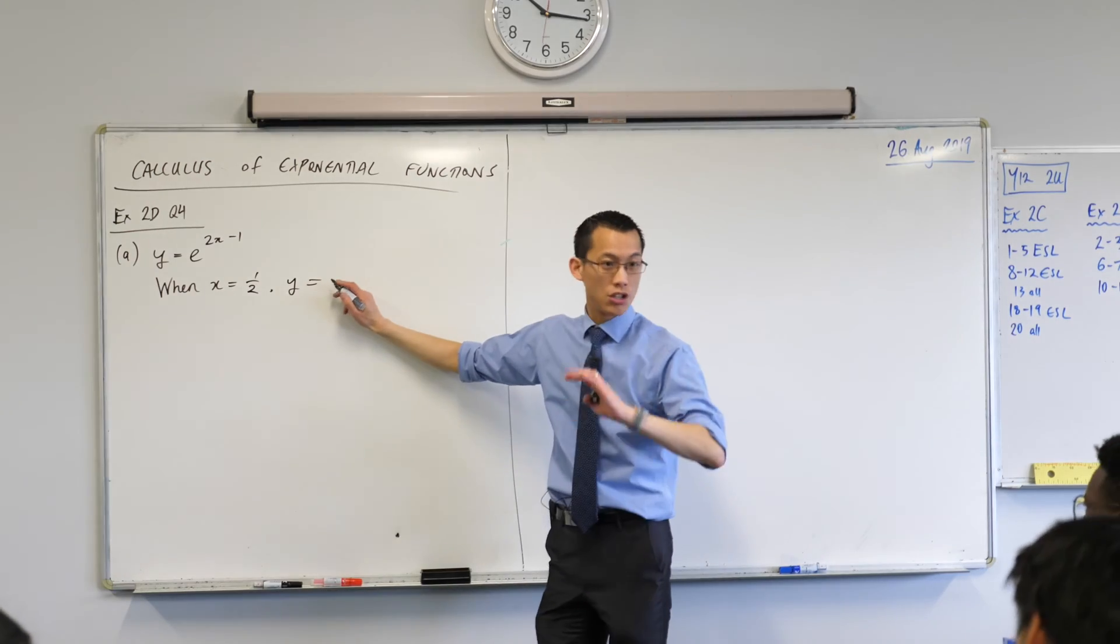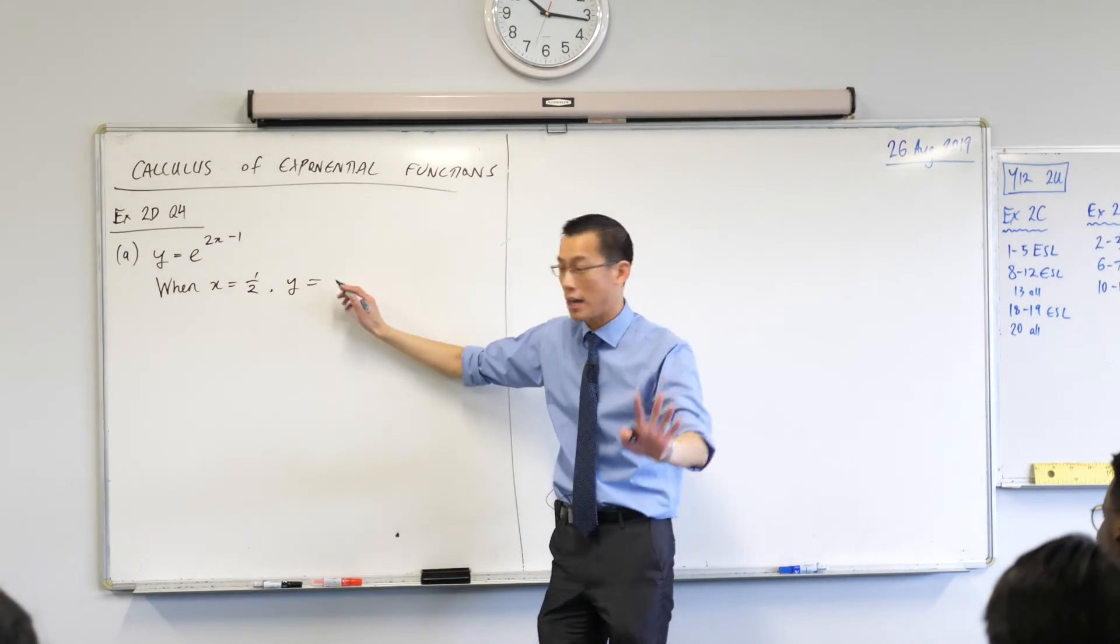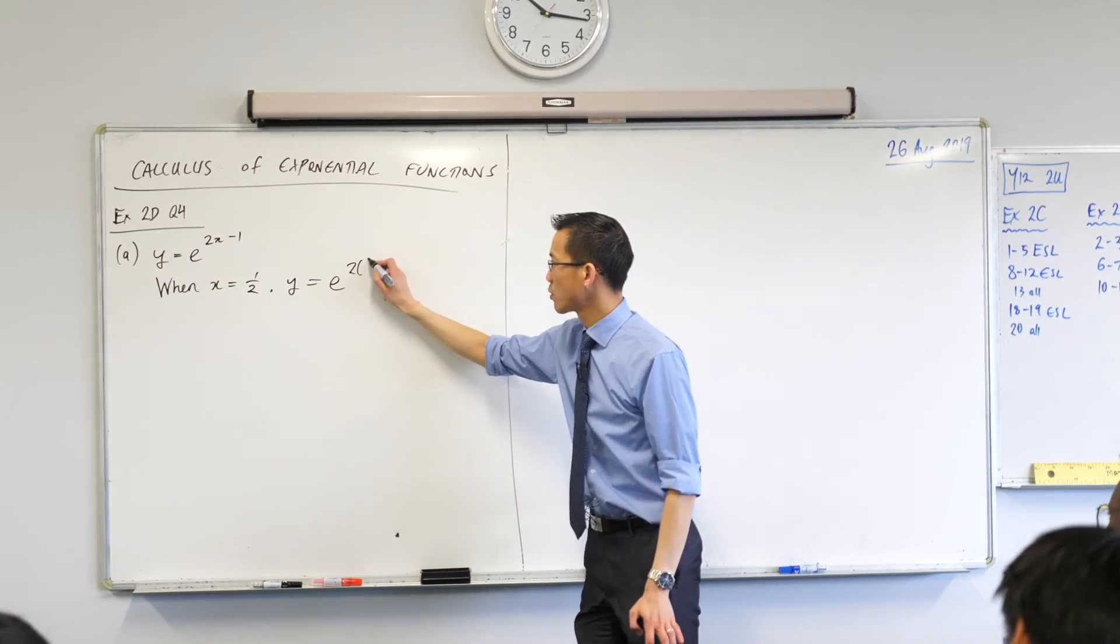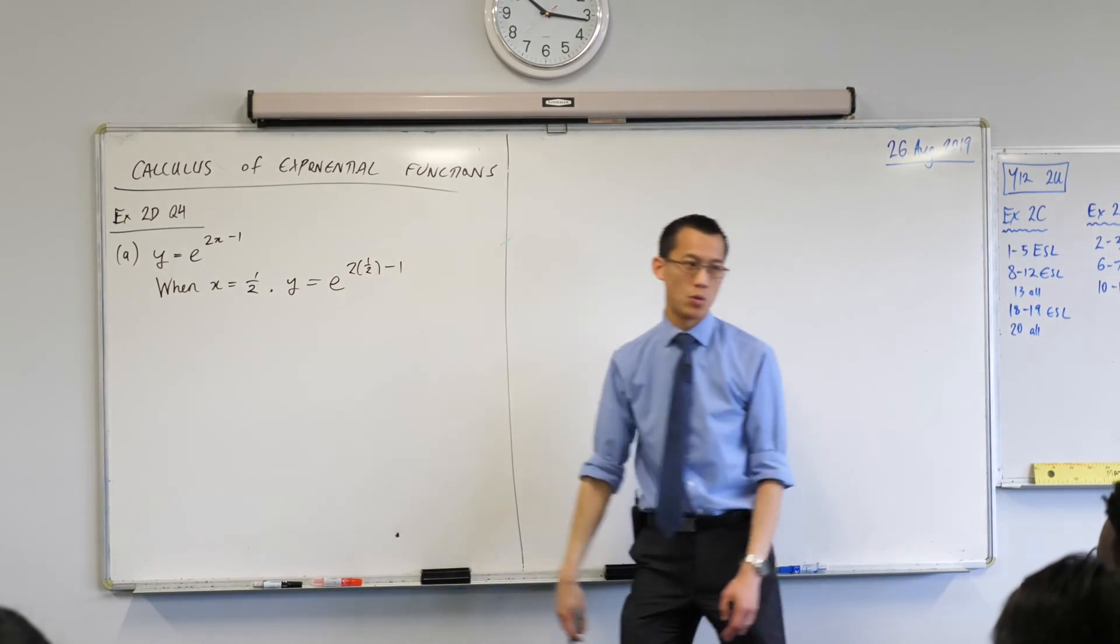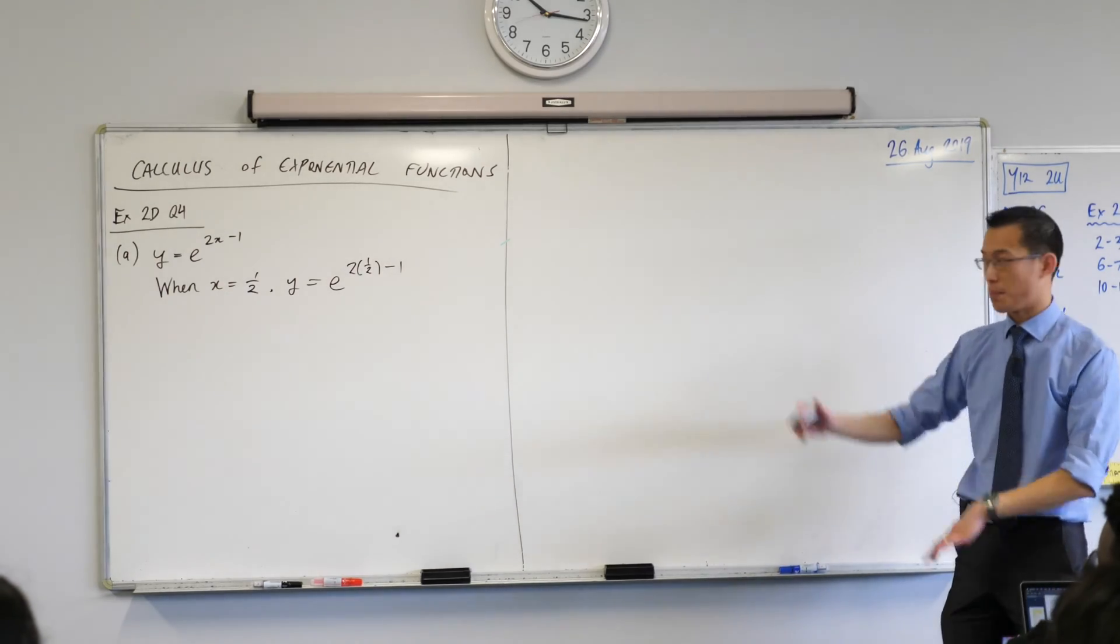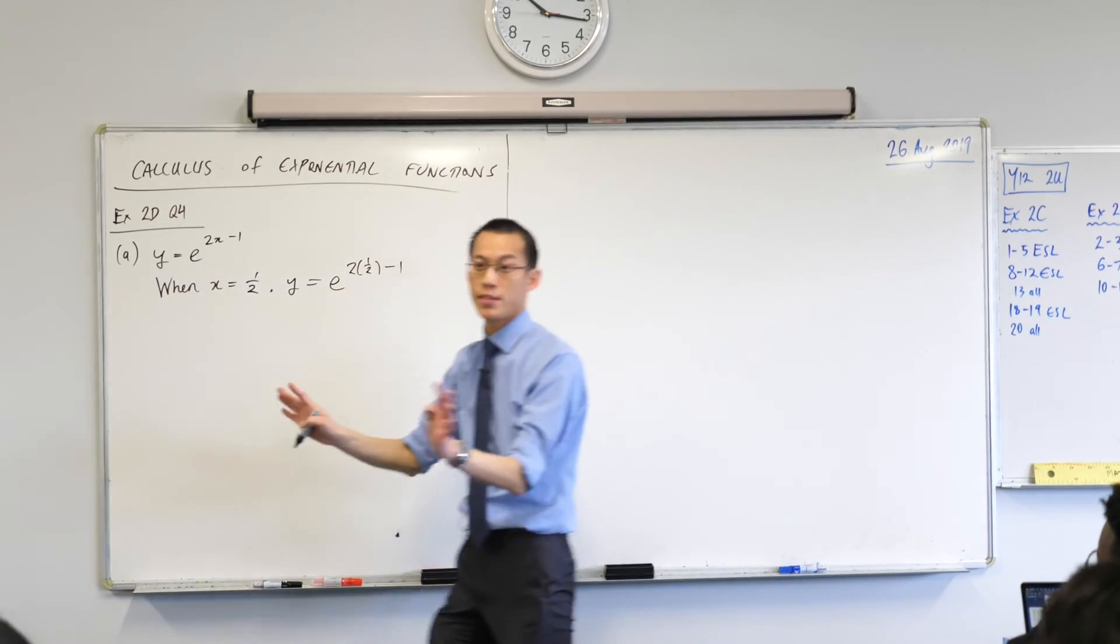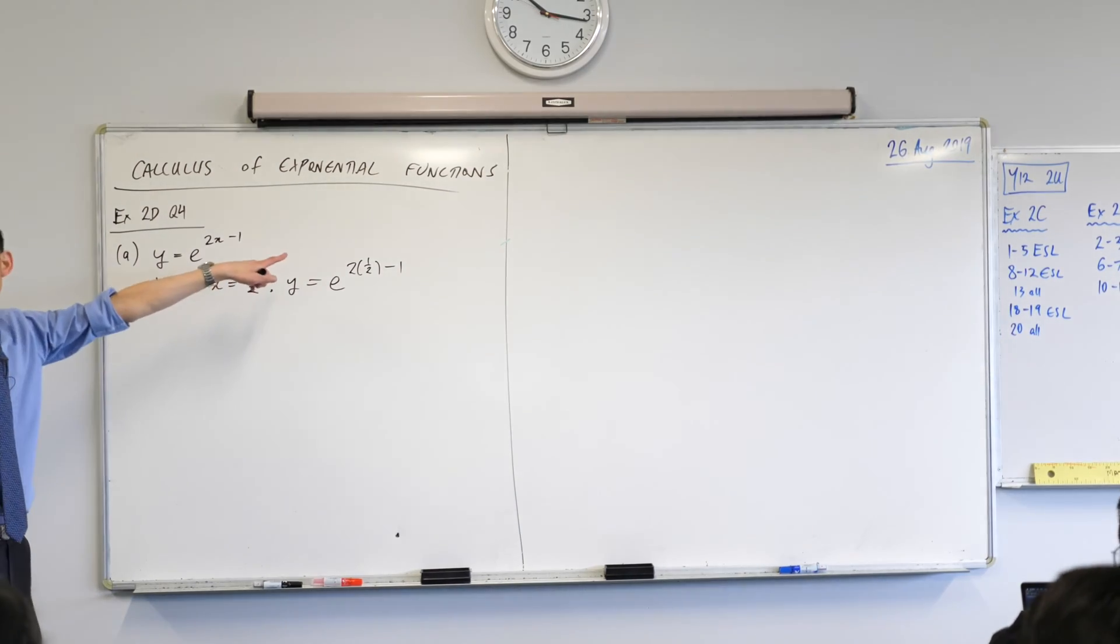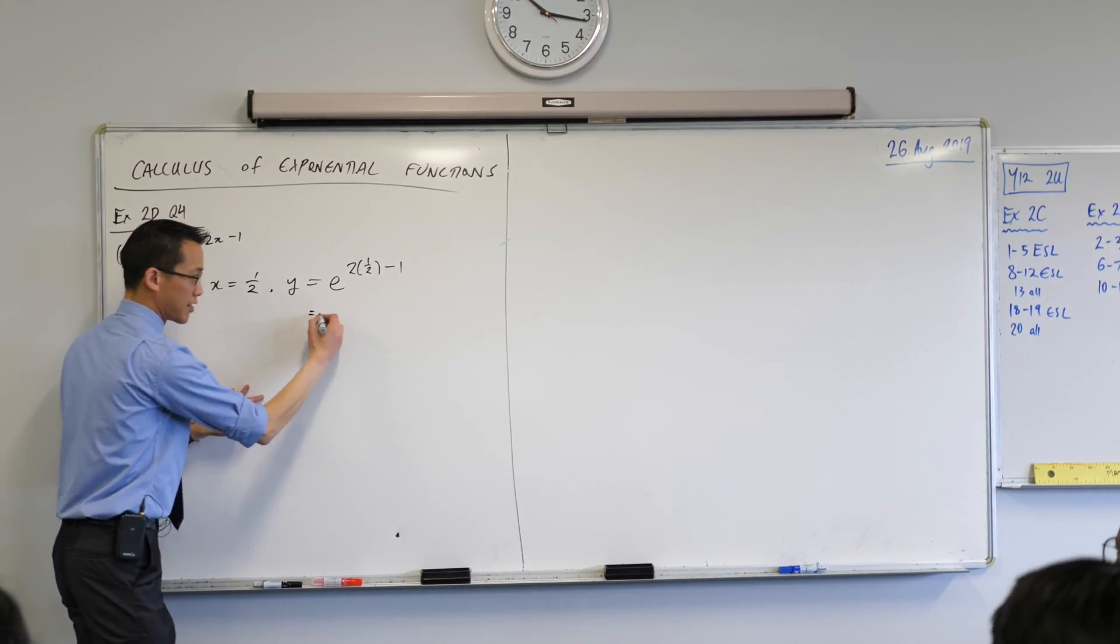and I'm just going to do a straight substitution, no changes or anything like that, e to the power of 2 multiplied by a half minus 1. Now we know what 2 multiplied by a half is, but I'm doing this step really explicitly so I don't screw up my substitution, and so that if I do, it's really easy to see where I went wrong.